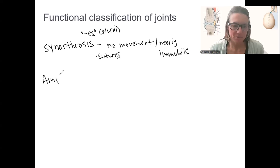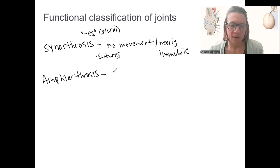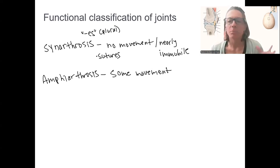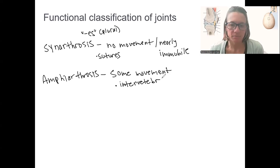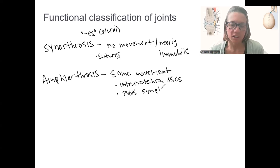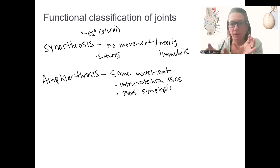Amphiarthrosis — these joints have some movement. They're not freely movable like your knee, but they have some flexibility. Examples include your intervertebral discs between the vertebrae of your spine, and the pubic symphysis, which connects the two pelvic bones together. In both of those cases, there is some mobility.